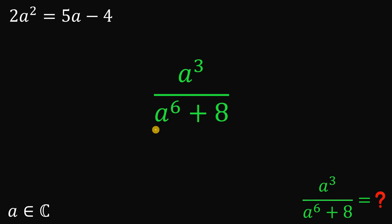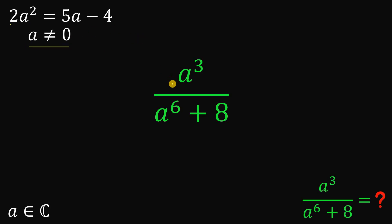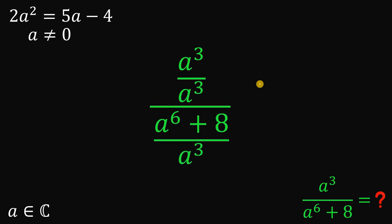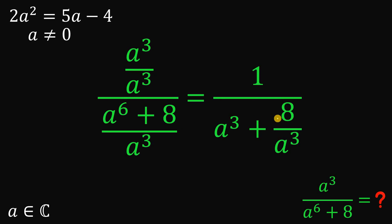Let's first set up the expression we want to evaluate. Given the equation 2a² = 5a - 4, note that a is not equal to 0, because plugging in a = 0 makes the left side not equal to the right side. Since a ≠ 0, we can divide the numerator and denominator by a³. The numerator becomes 1, and the denominator becomes a³ + 8 over a³ — equivalent to the original expression.